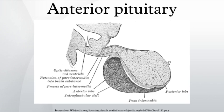A major organ of the endocrine system, the anterior pituitary is the glandular anterior lobe that, together with the posterior lobe, makes up the pituitary gland. The anterior pituitary regulates several physiological processes including stress, growth, reproduction, and lactation. Proper functioning of the anterior pituitary and of the organs it regulates can often be ascertained via blood tests that measure hormone levels.